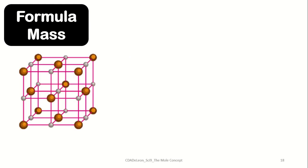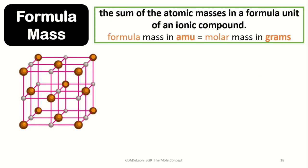On the other hand, when we talk about formula mass, this refers to the sum of the atomic masses in a given formula unit, usually of ionic compounds. It is almost the same as molecular mass, but we use a different term. Formula mass is expressed in atomic mass units, or AMUs, while its molar mass is also expressed in grams.